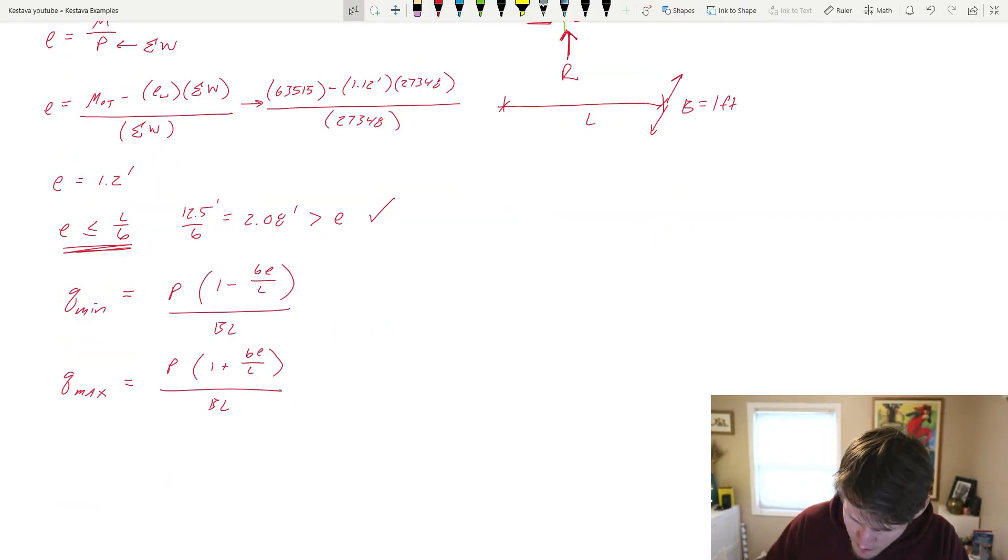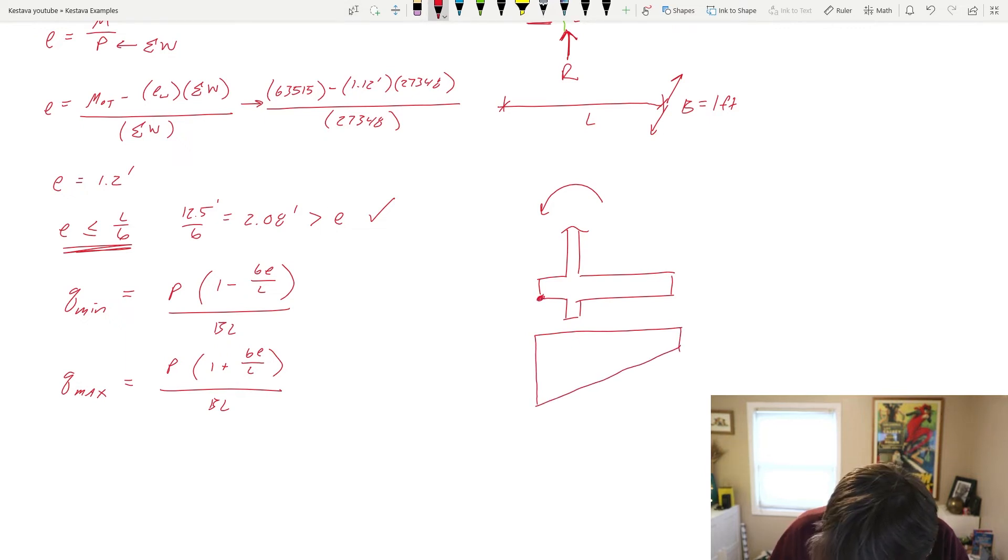And ultimately, what's going to be happening is we have our footing scenario here. And since we know that we're in this range, and we know that we have moment cranking like this, we are going to have a higher bearing pressure towards point A, towards the toe of our retaining structure. That's just intuitively what happens with cantilevered retaining structures. So this will be your Q max, and over here will be your Q min.